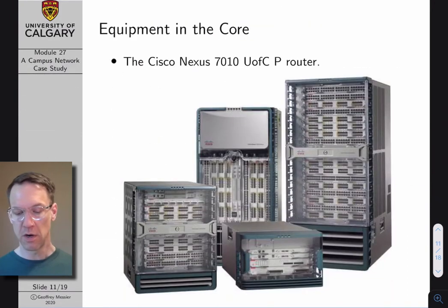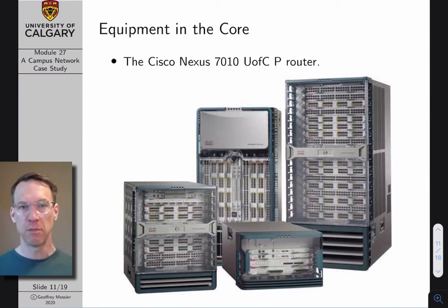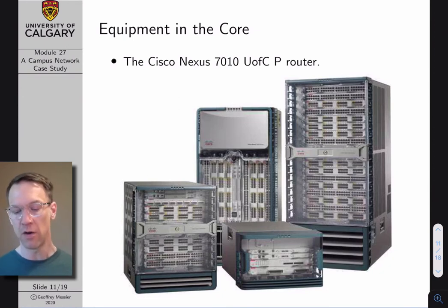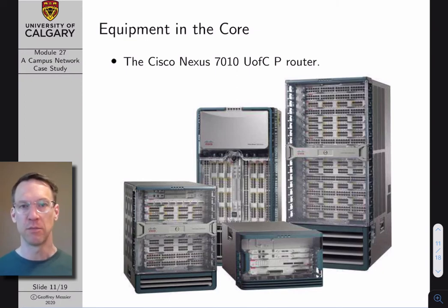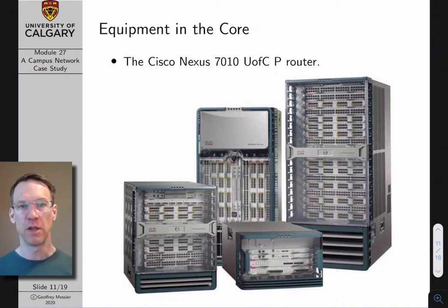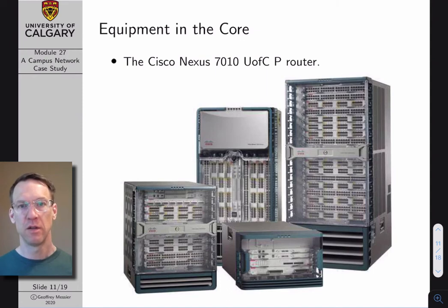Here's a picture of what the Nexus 7010 P-routers look like. If you've ever been inside a server room, basically everything looks like this. All these routers are essentially big black or gray racks of equipment with slots for large cards to plug into. These cards often have a bunch of gigabit or Ethernet cable ports, so you typically see a lot of cables plugged into them.